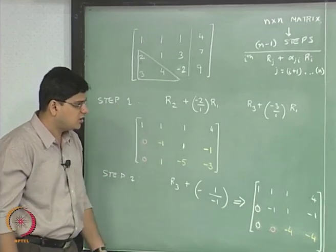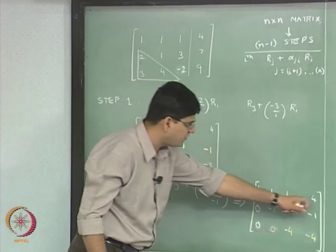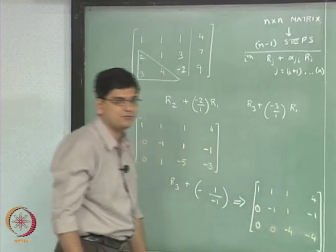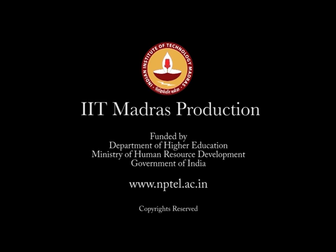This resulted in the lower triangular matrix: 1, 1, 1, 4; 0, -1, 1, -1; 0, 0, -4, -4.